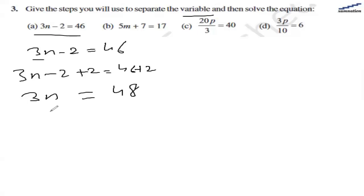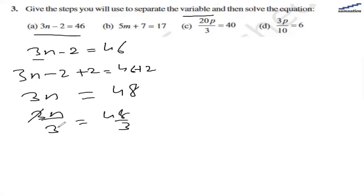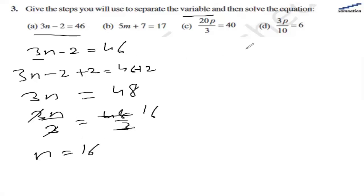Now we are going to divide by 3 on both sides. So we have 3n divided by 3 equal to 48 divided by 3. The 3s cancel and give us 1, and on the right hand side 48 divided by 3 gives us 16. So n equals 16 is the solution for part (a).